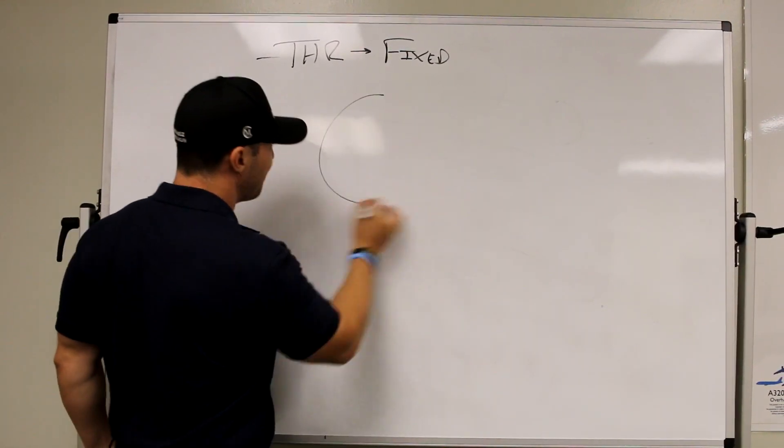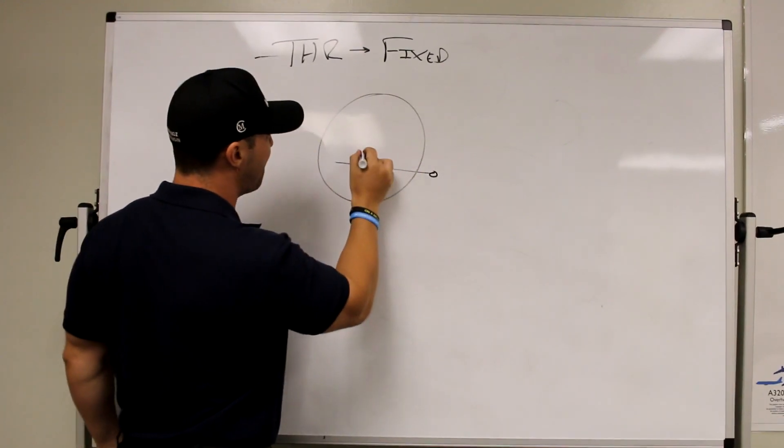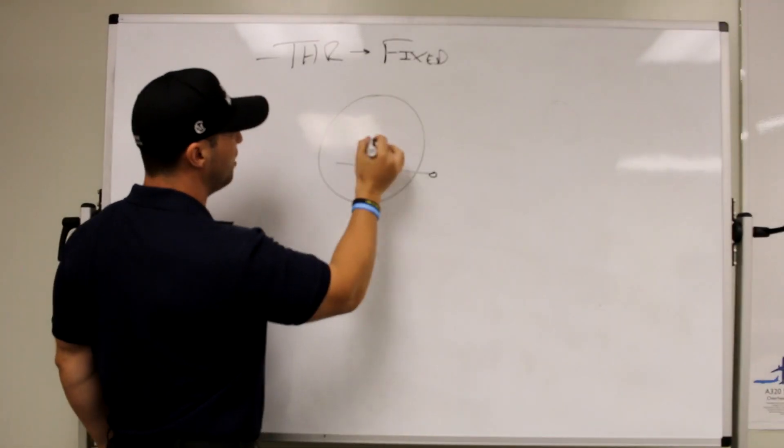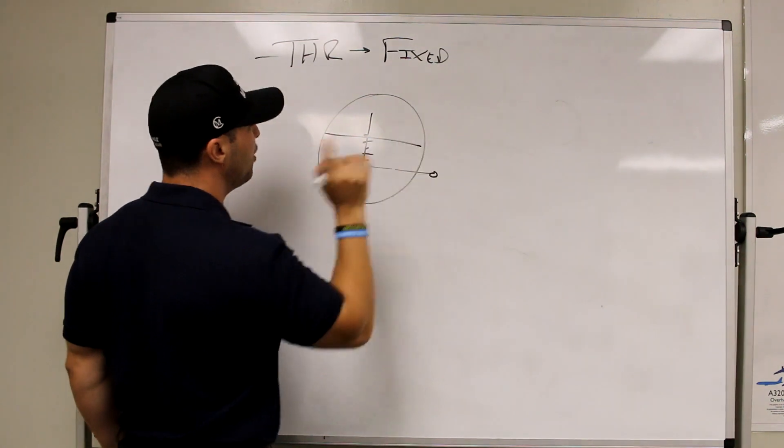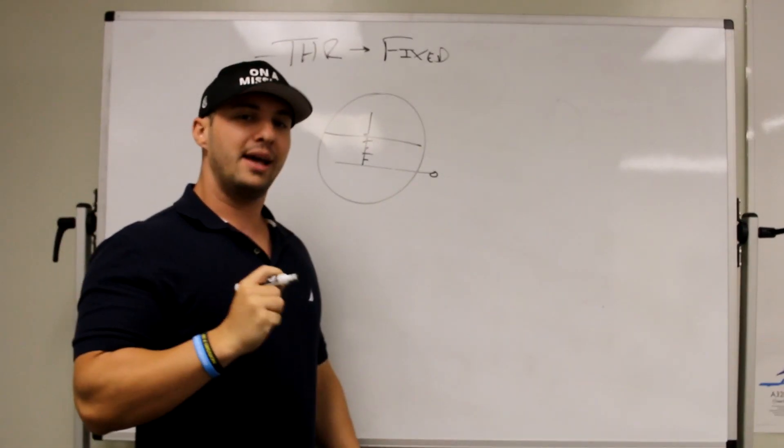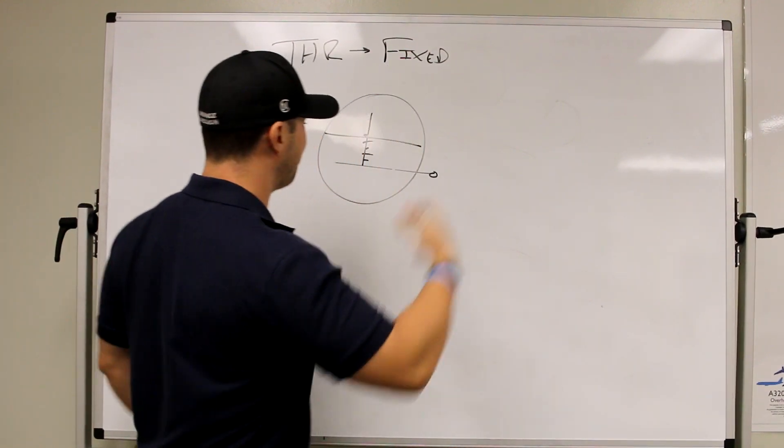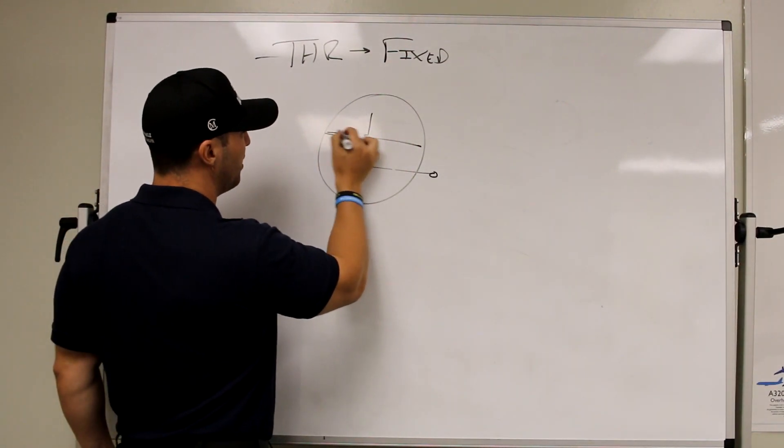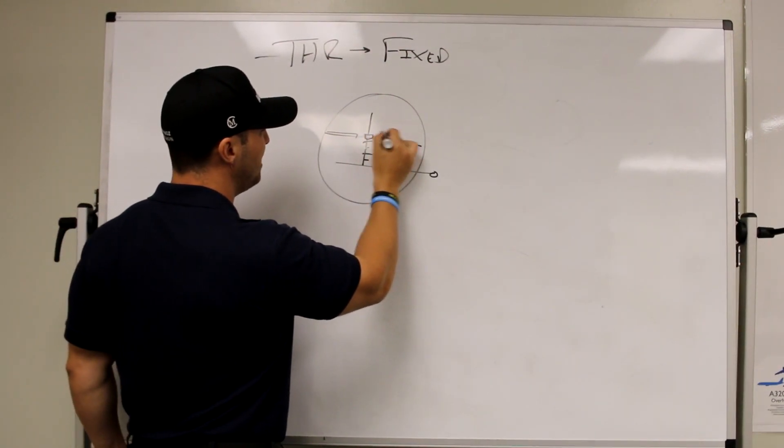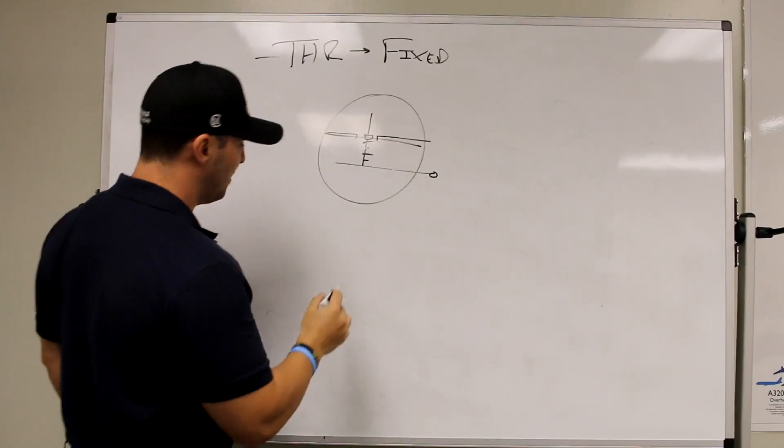So as a result of the thrust being fixed, if you're not following the flight director command bar perfectly, you will likely see your airspeed go array. It's going to either accelerate or decelerate to a point where it's not really where you want it to be. It's not where it's being commanded to be. Let me give you an example of this.